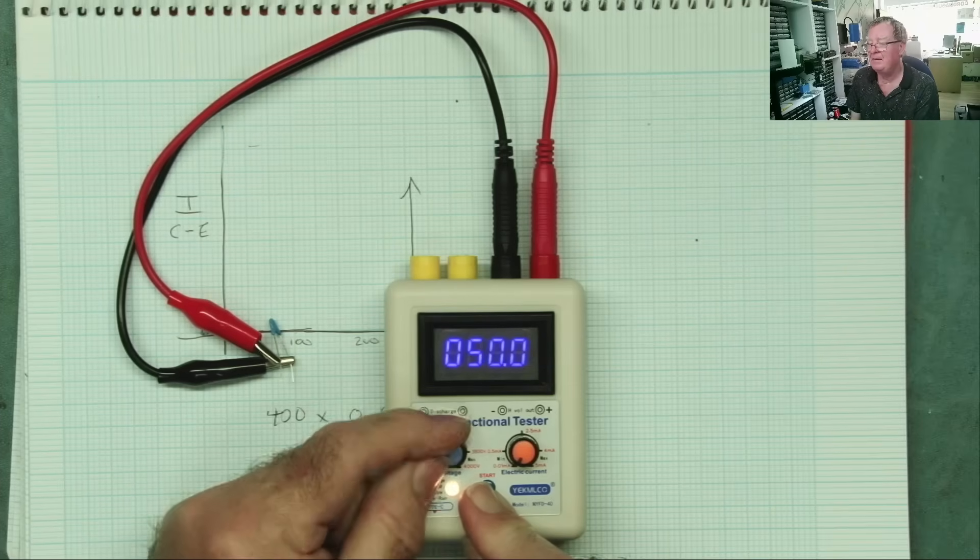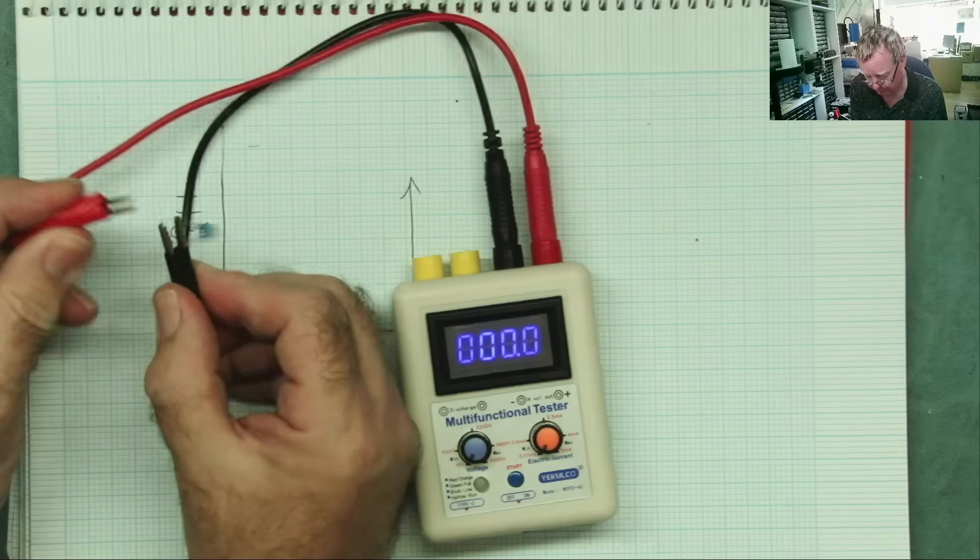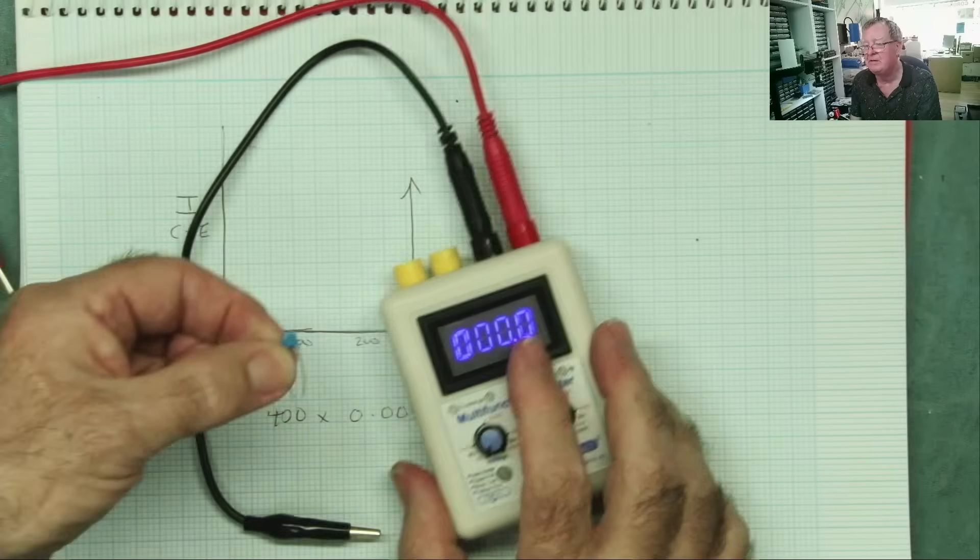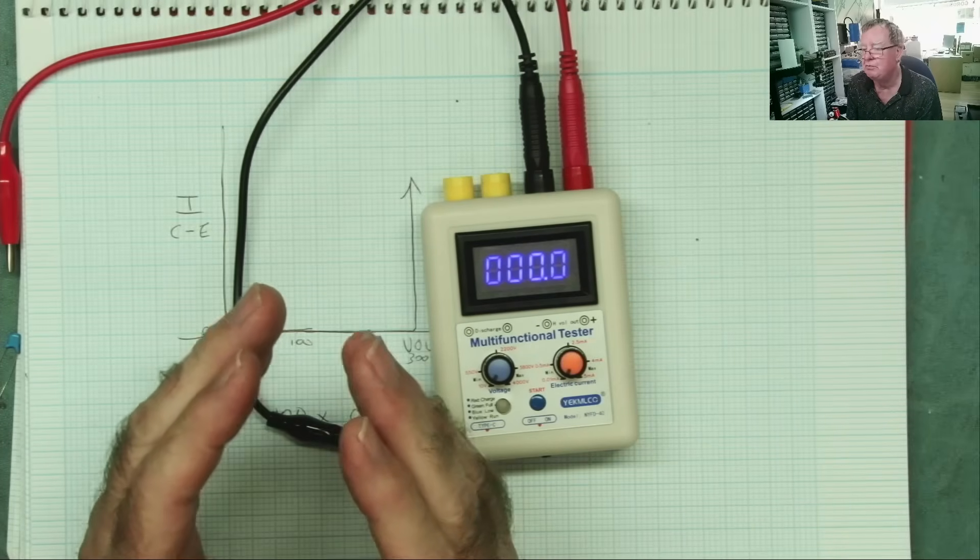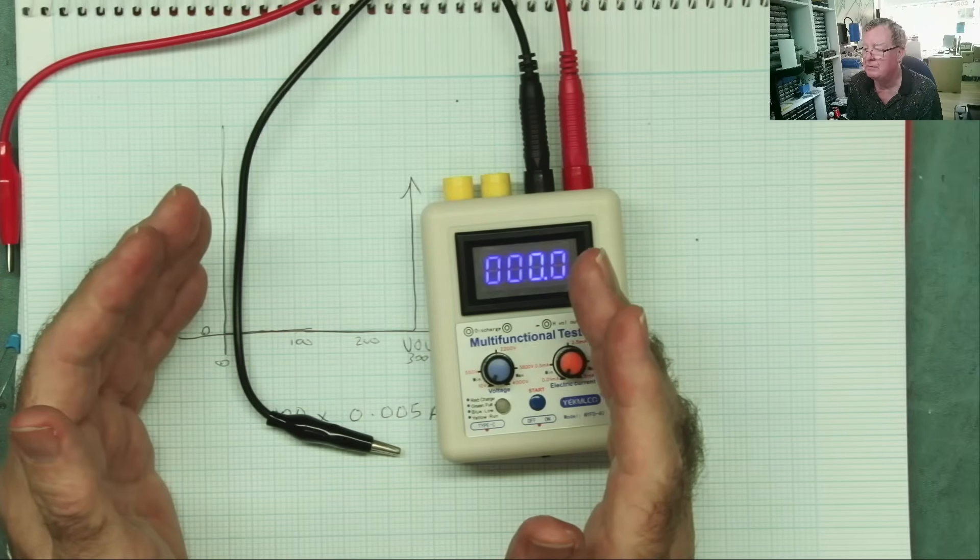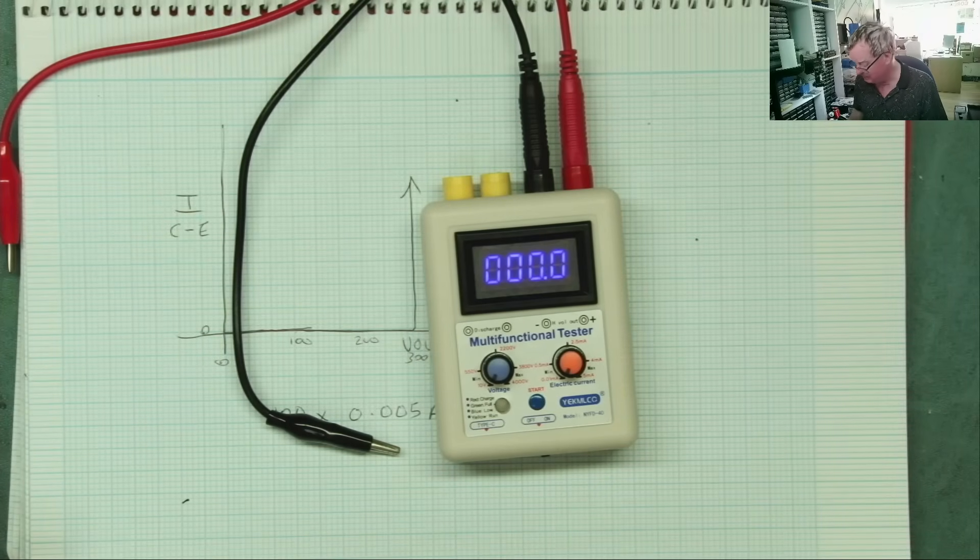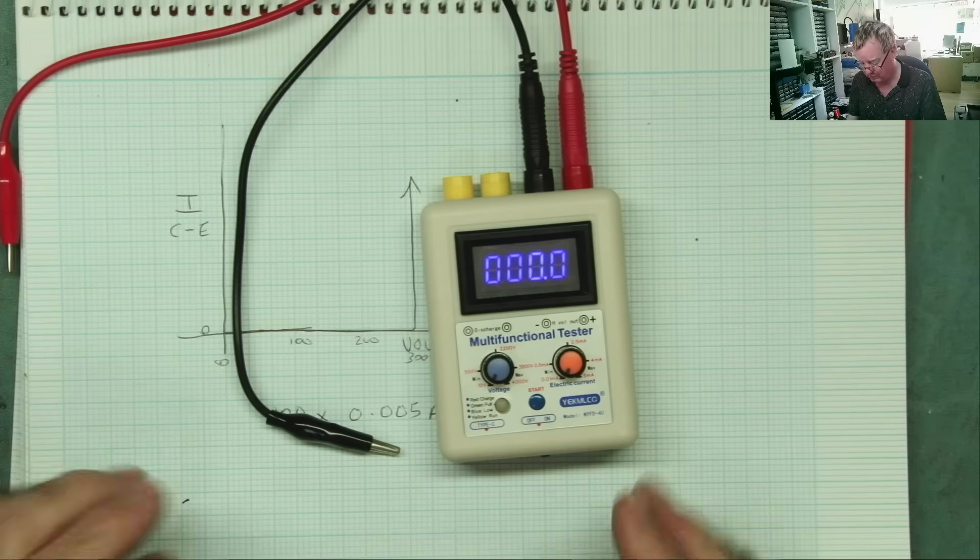So what's happening here is the capacitor isn't in breakdown. They don't behave in the same way as the transistor. So you can just increase, increase, increase the voltage until you effectively get it to arc over inside. So it blows a hole in the dielectric, the insulating layer. And then it fails. And that is destroyed.